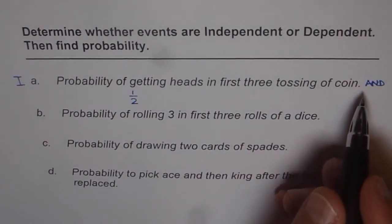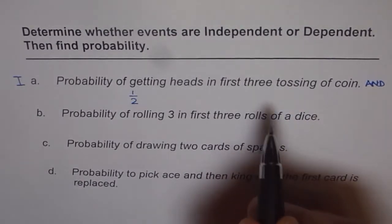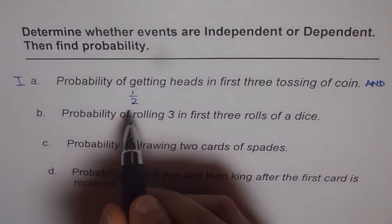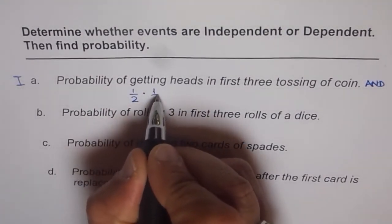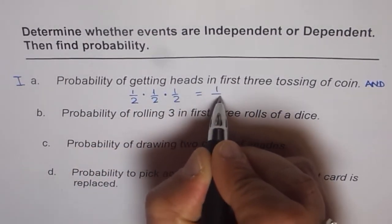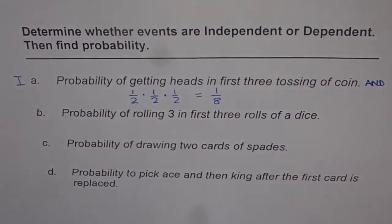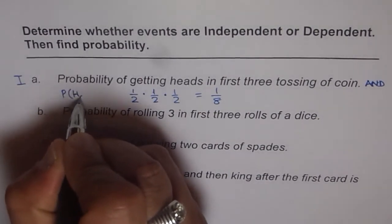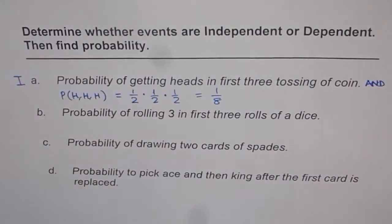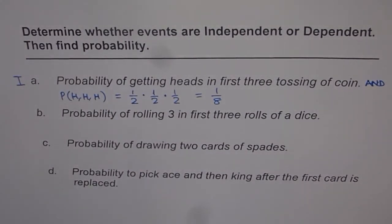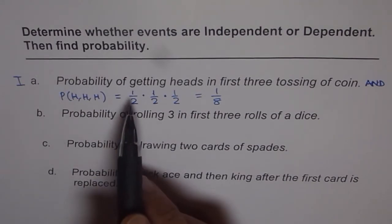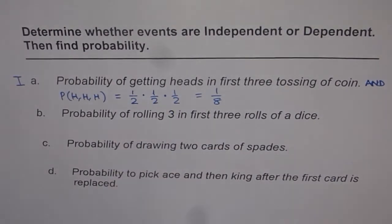We have to get three heads in a row — heads and heads and heads. Probability of getting one head per toss is half. So for the next one, again half, and the next one, again half. So that gives us one out of eight. The probability of getting heads and heads and heads is equal to half times half times half, which equals one out of eight. This is an independent event where we are doing three events — flipping the coin thrice — and we multiply the probability of half three times to get one out of eight.